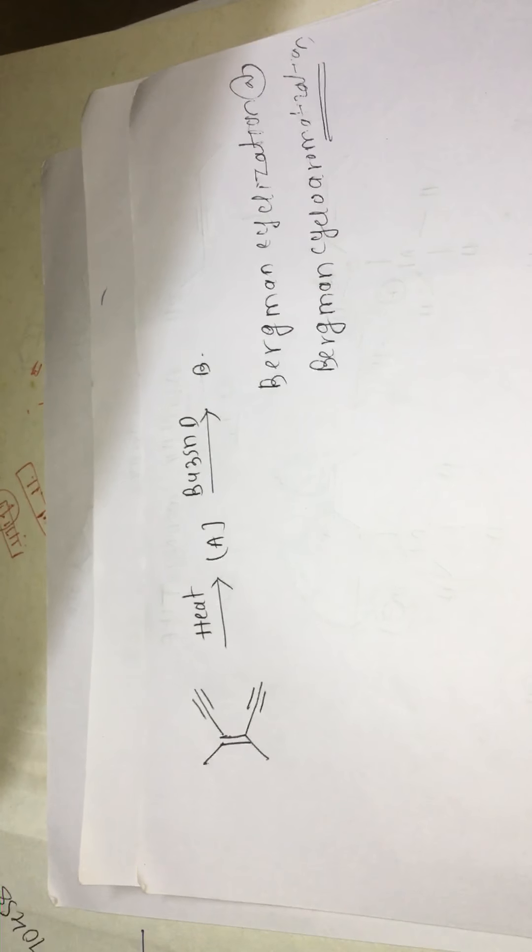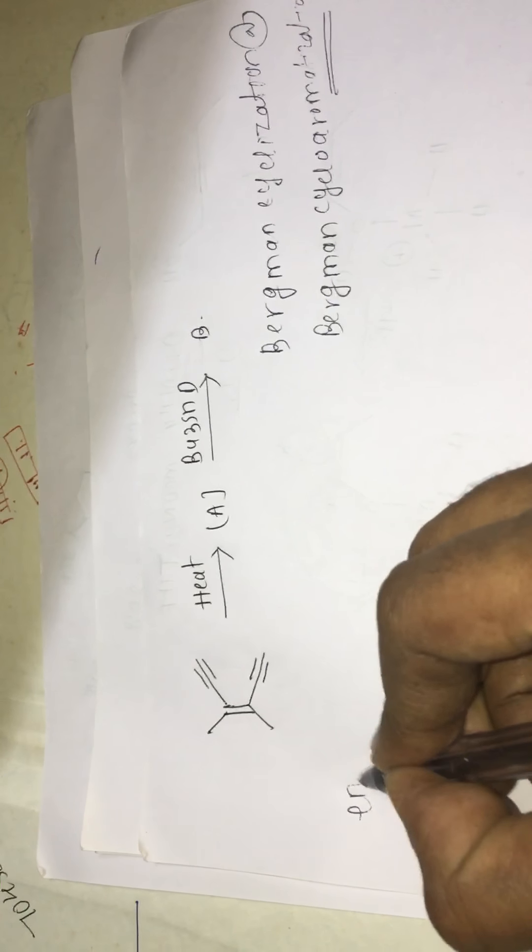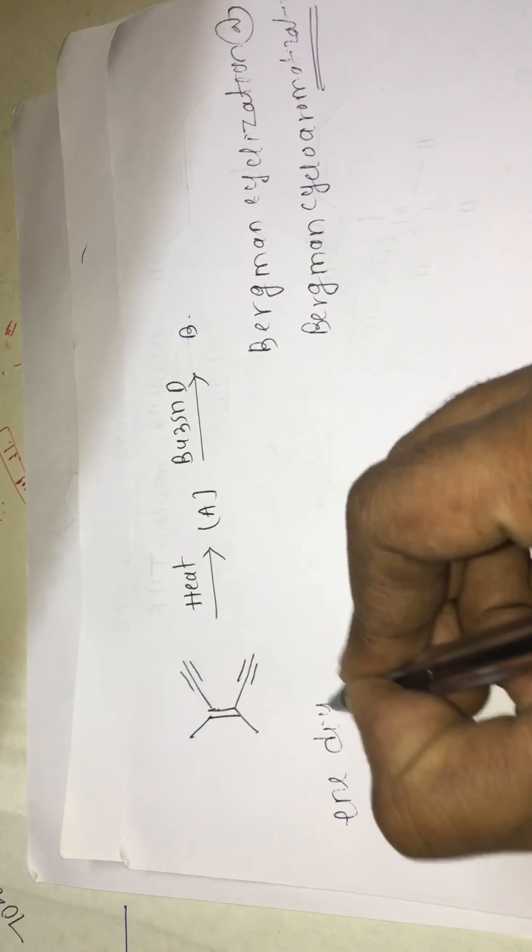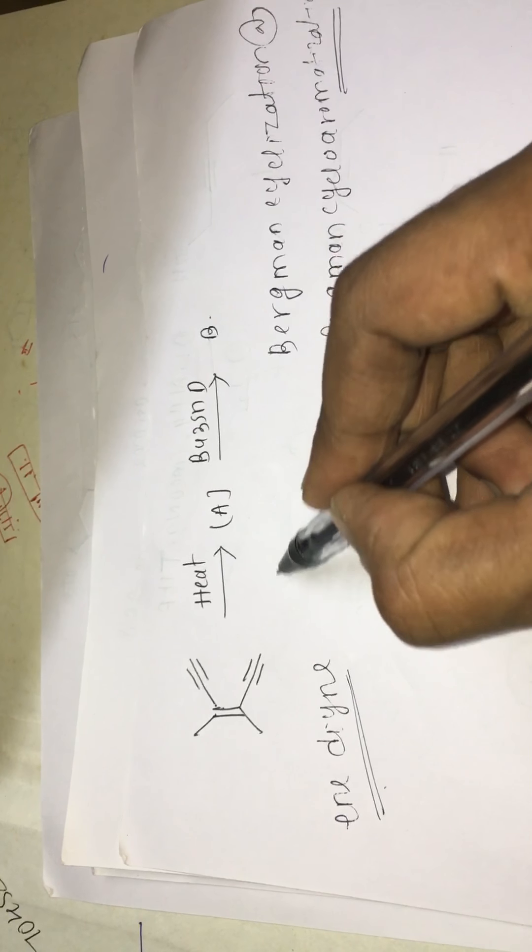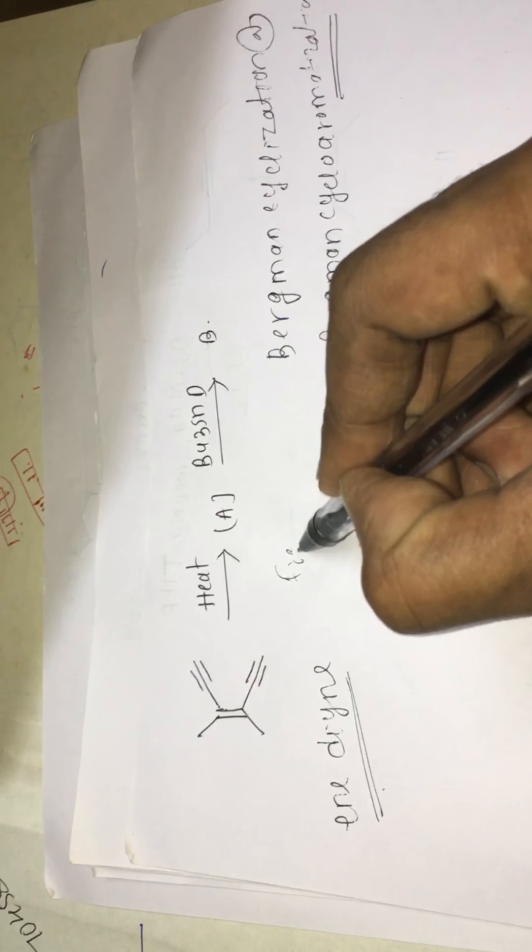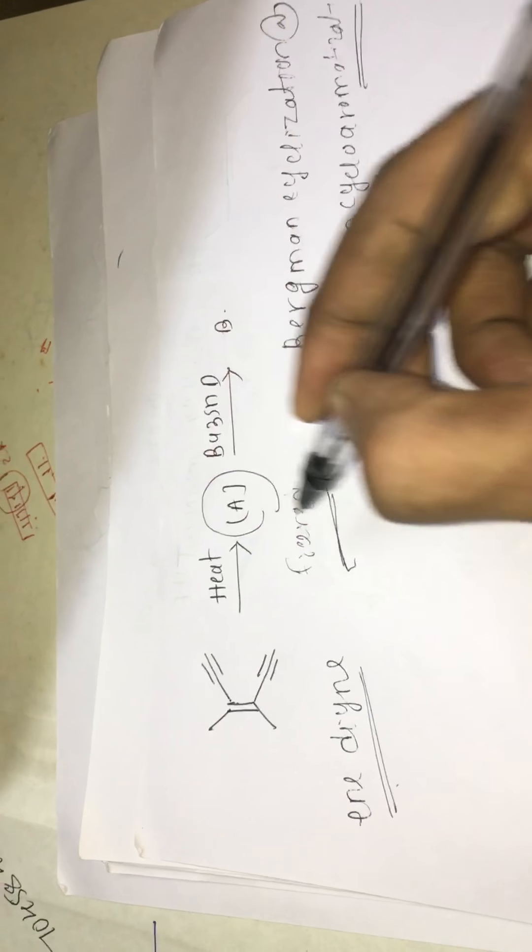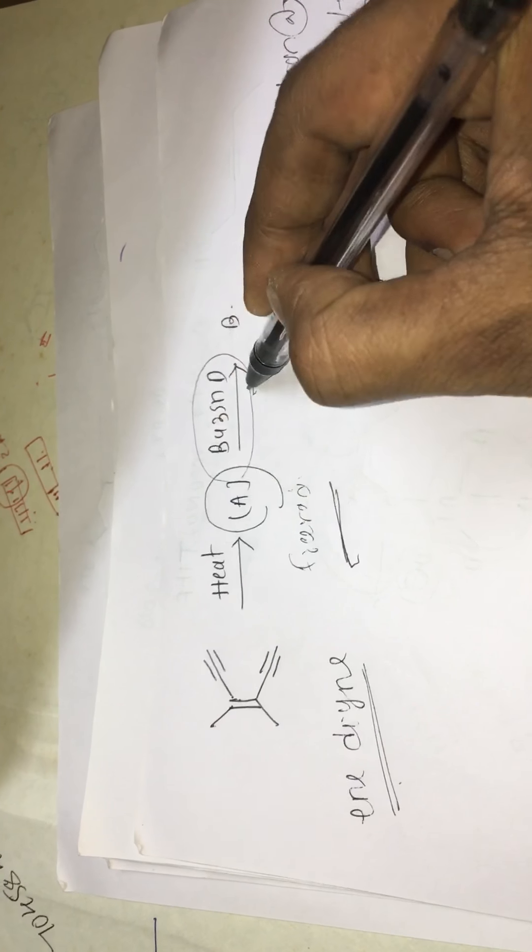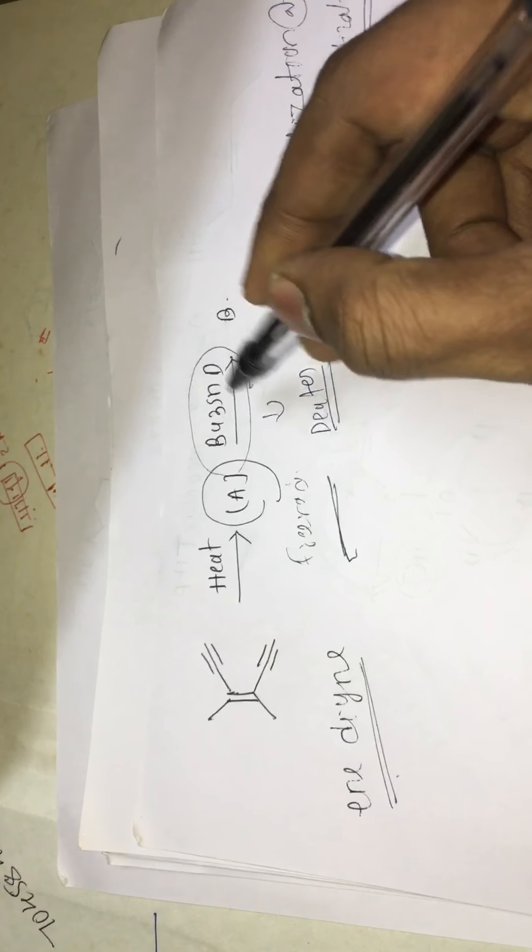So in this reaction what we are going to do, we are taking an endiyne. We are just heating this endiyne so that we can generate a free radical here. So here A is the compound which has free radical. And here this is the source for the deuterium.